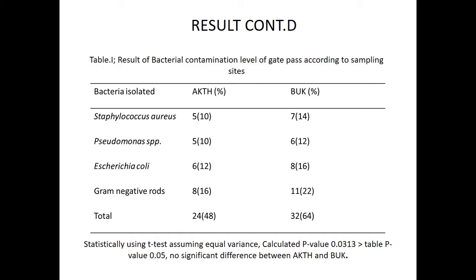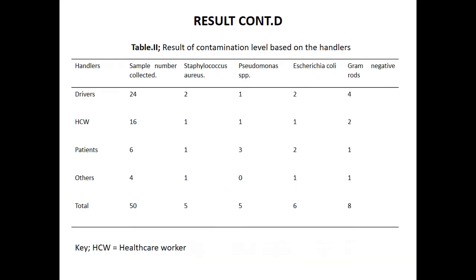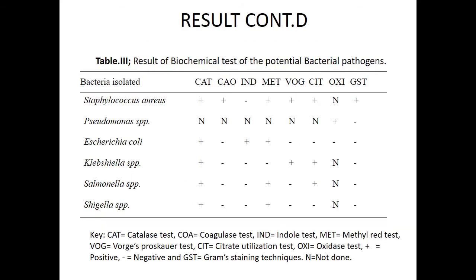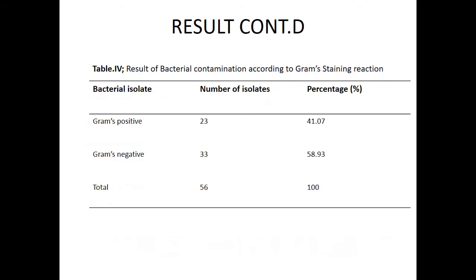Here is the statistical calculation, which shows no significant difference using a t-test assuming covariance. Here is the result of contamination level based on handlers. Table 4 is the table of contamination according to gram staining reaction.